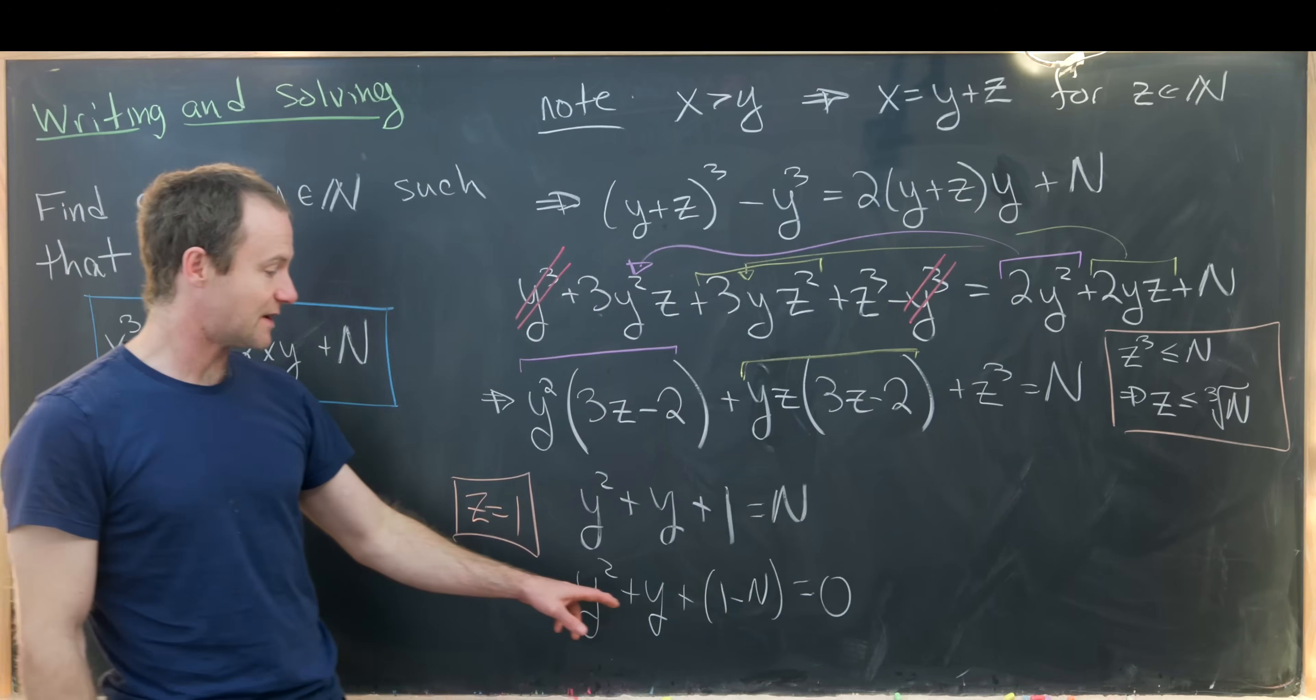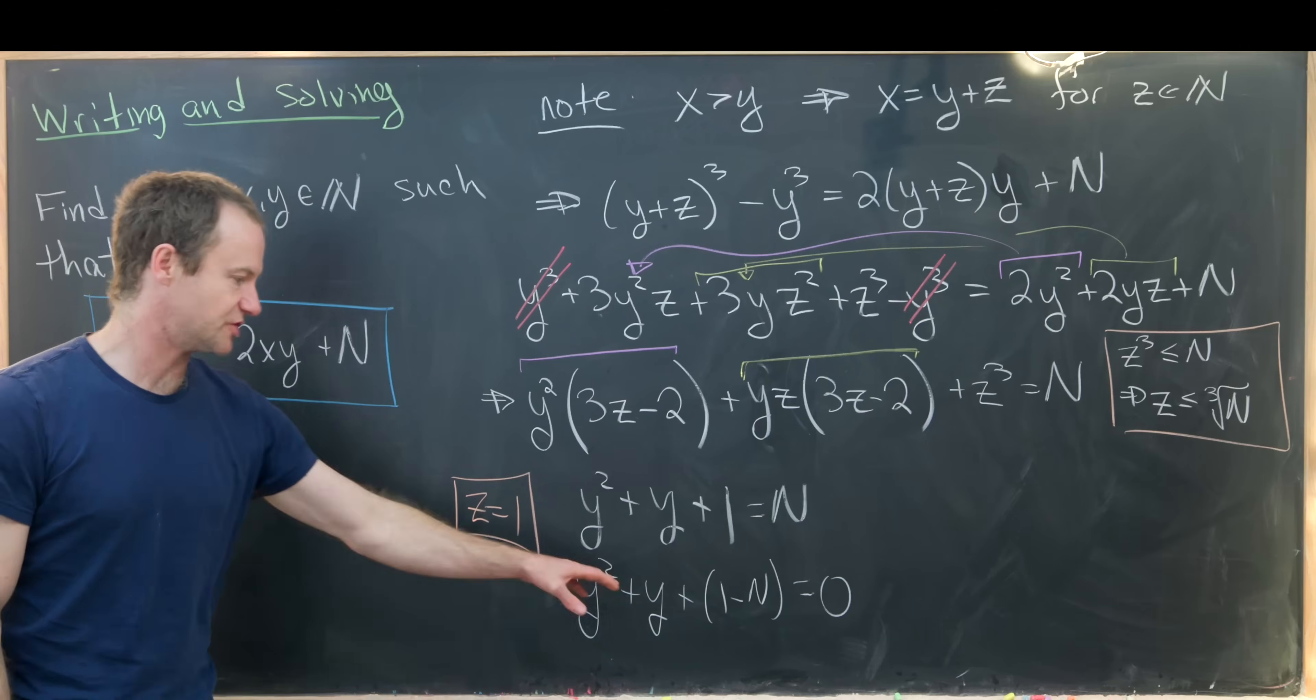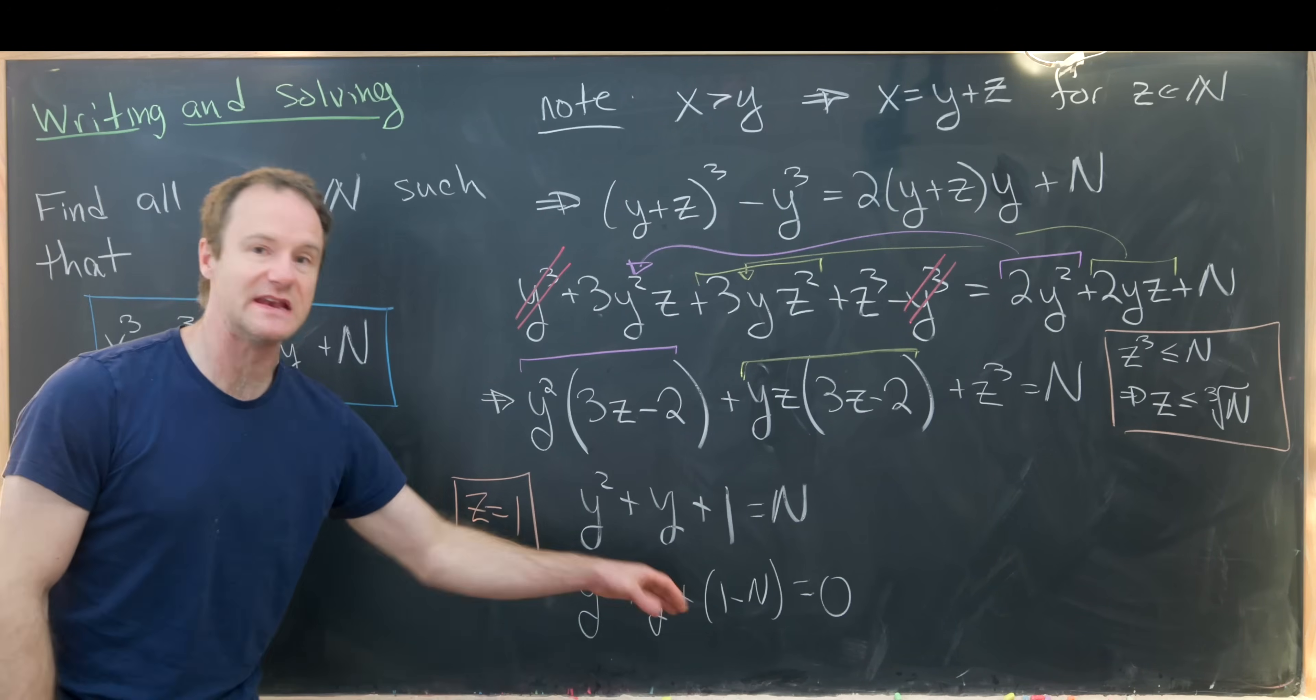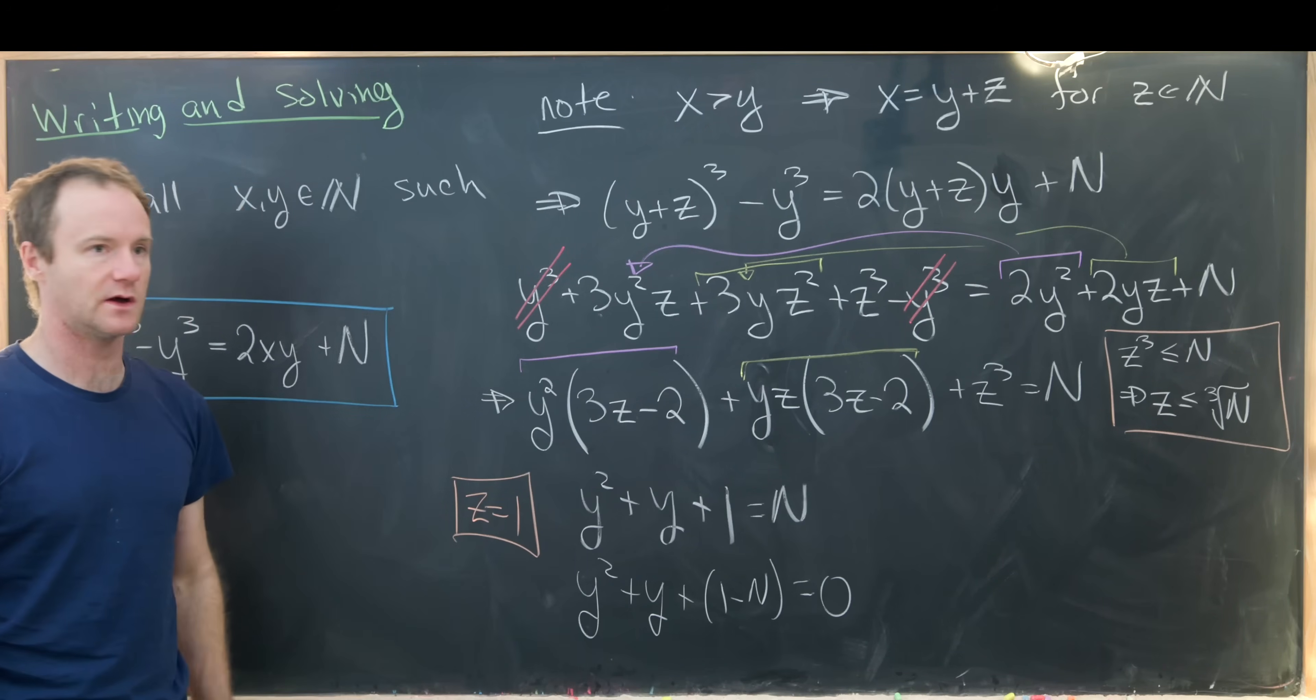So that means this number 1 - N must factor in a way so that when you combine its factors you get the number 1. Well this is going to be negative, so the factors will be positive and negative, so they'll subtract to give us 1.